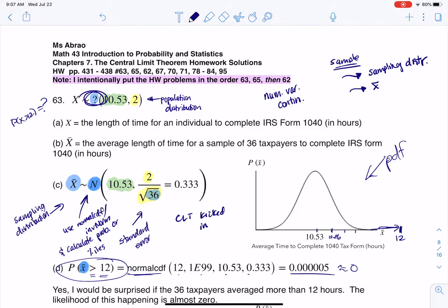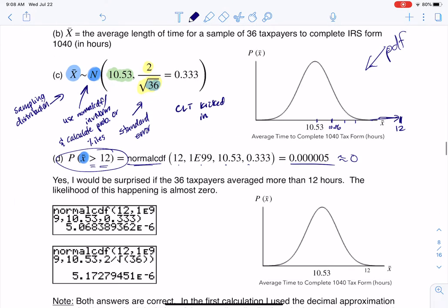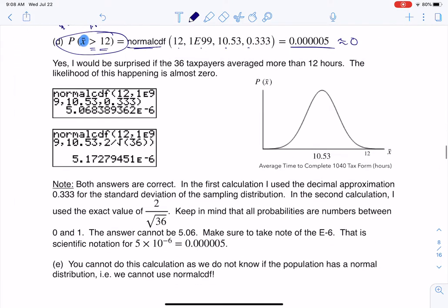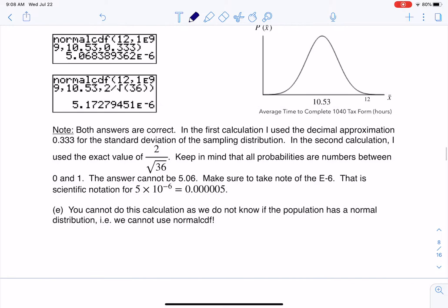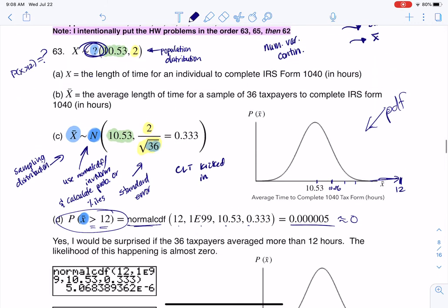It says, would you be surprised if one taxpayer finished his form in 12 hours? For part E, I can't do this calculation. I can't do the probability that x is greater than 12 because I don't know the distribution - I don't know if it's normal, I don't know if it's uniform, I don't know anything, so I can't do that. And that's how we round out number 63. Thanks so much everyone, bye.